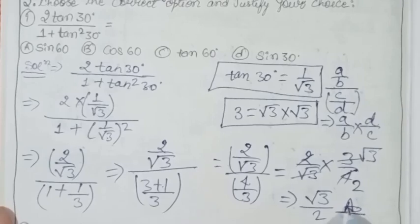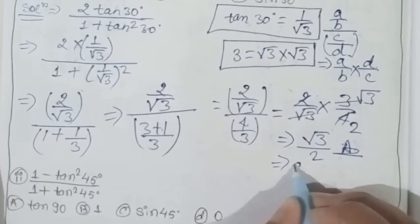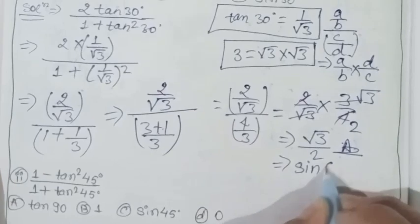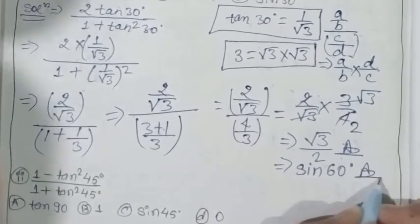And root 3 upon 2, which value is this? This is sin 60°. So root 3 upon 2 is the answer.